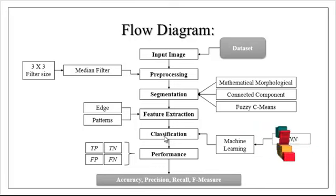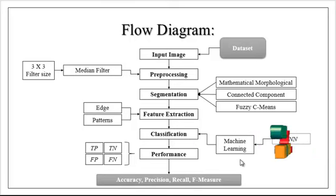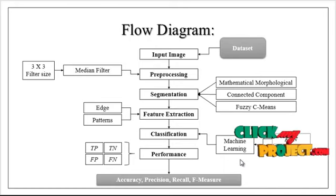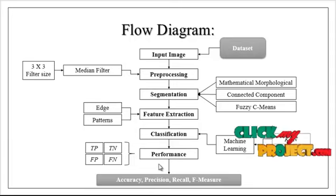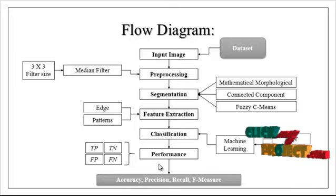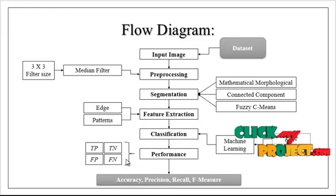After generating the test feature, we move to the classification step. In this classification step, we use machine learning classification to classify whether the input image contains a tumor or not. After classification, we move to performance estimation, where we apply accuracy, precision, recall — which means accuracy, sensitivity, and specificity — using the true positive, true negative, false positive, and false negative formulas.